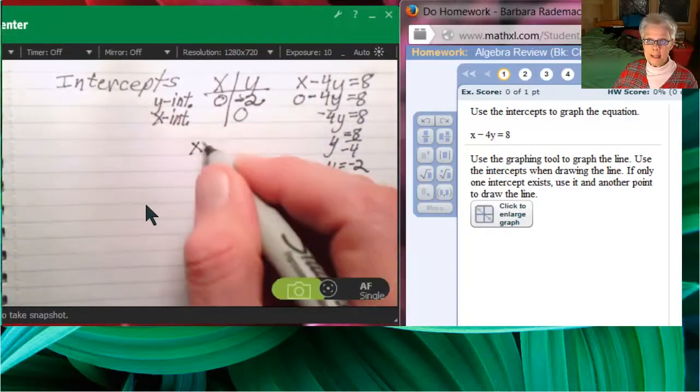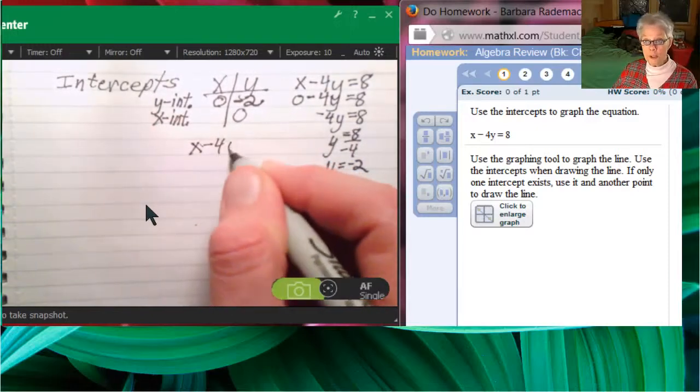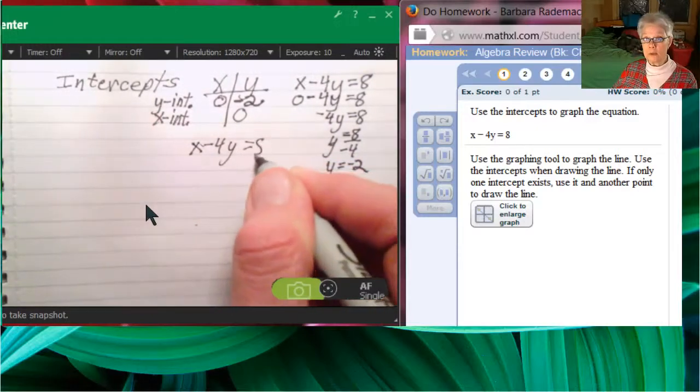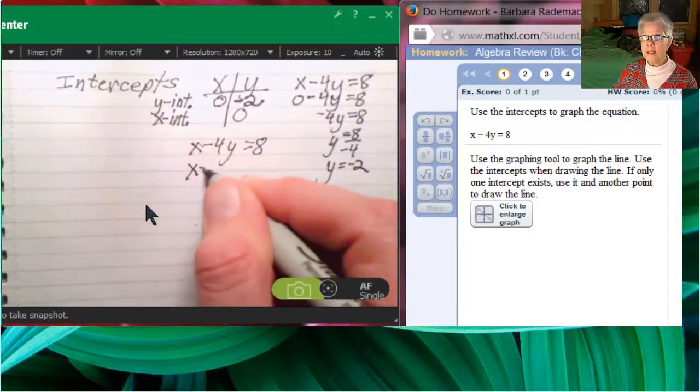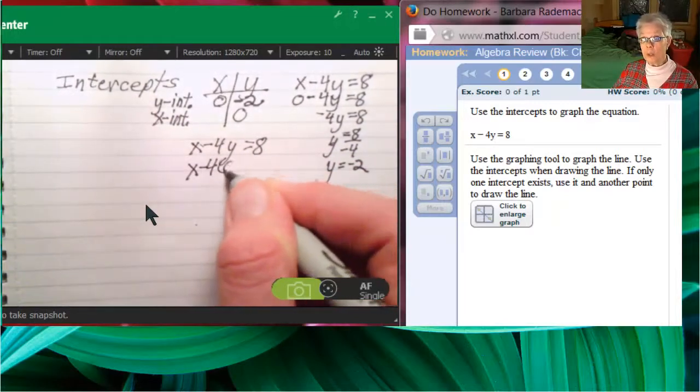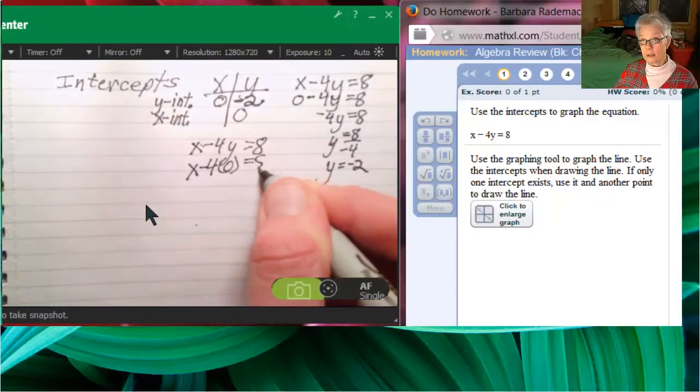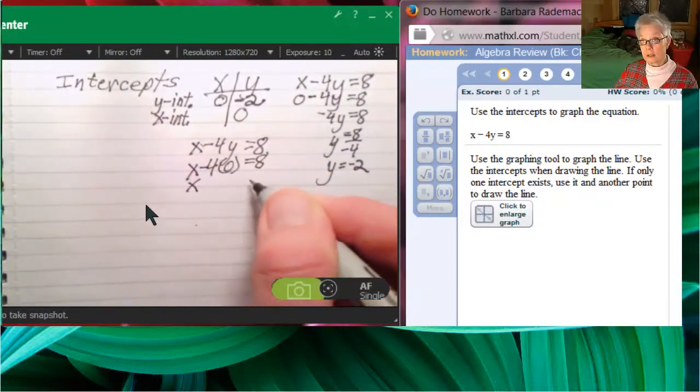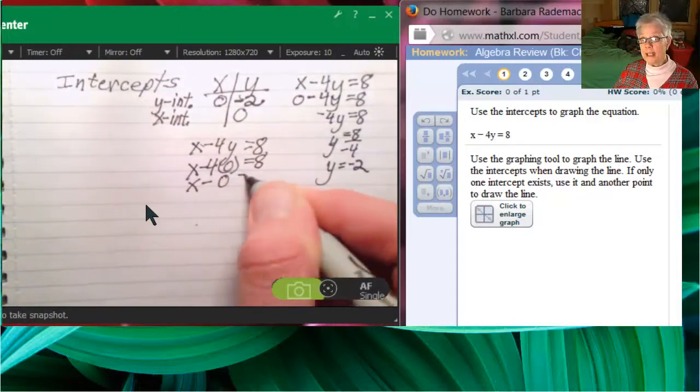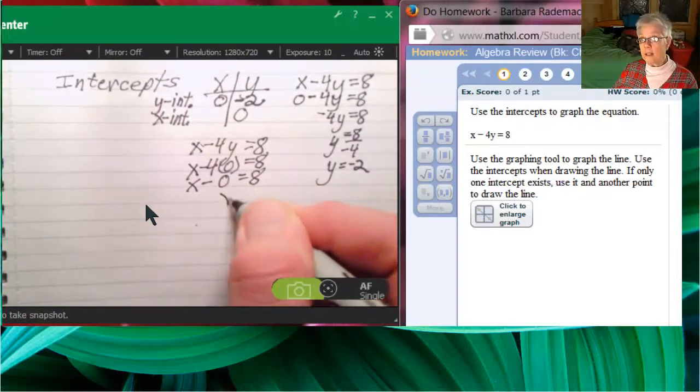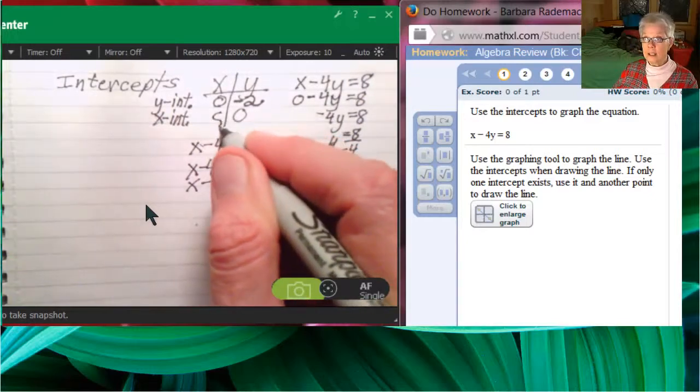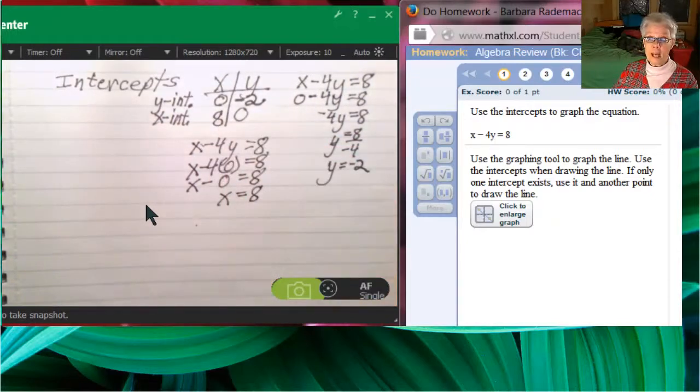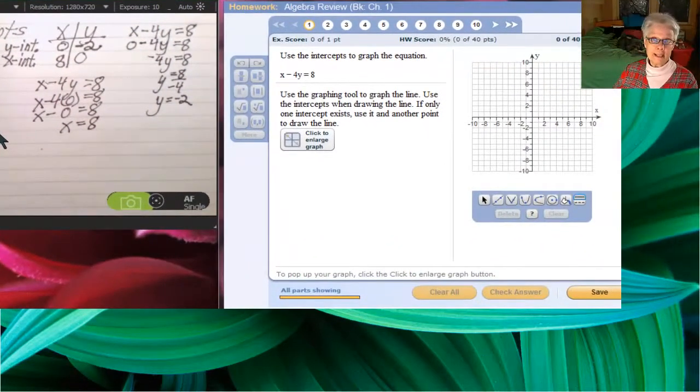Now the x-intercept is what you get when y equals 0. So I'll substitute 0 for y in the original equation. So x minus 0 equals 8, otherwise known as x equals 8. So if y is 0, x is 8. And that's where the line crosses the x-axis.